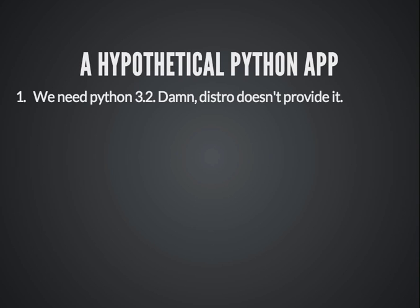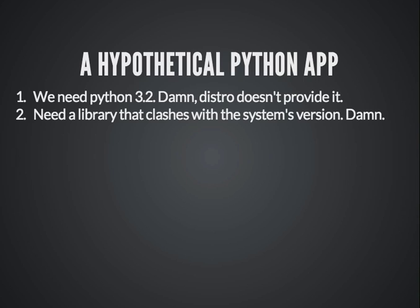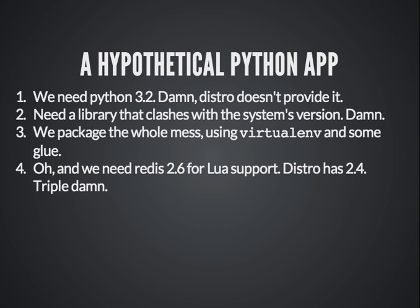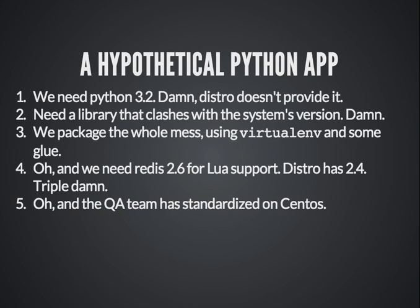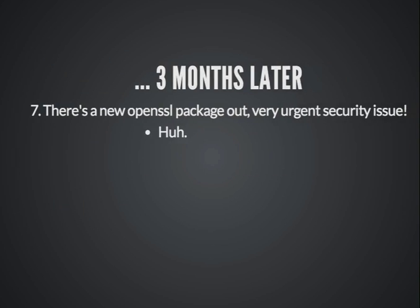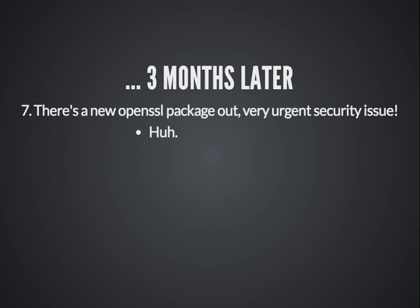Let's say a new developer puts together a Python app. Oh, it needs Python 3.2, but the distro doesn't have that. Now we need a library that clashes with the system version. OK, we can use virtualenv and pythonbrew and glue it together. Oh, it's not just Python — we need a newer version of Redis because it needs Lua support. The distro has 2.4, but we want 2.6. And the QA team is standardizing on CentOS, but we're running Ubuntu. Could you make both packages? And this is a Node app we want to run as a search service under /search. These are very real conversations, and effectively packaging all of those things can be a huge pain.